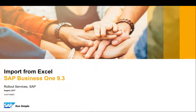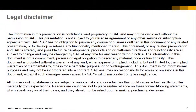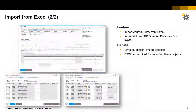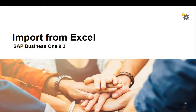Welcome to this short clip on the Import from Excel feature in SAP Business One version 9.3. In the Import from Excel function, you can now import journal entries. You can also import serial and batch numbers from Excel from within a transaction. You have additional authorizations to restrict this functionality to specific users. You can also import a single journal entry directly from within the journal entry form. Finally, you can import GL and BP opening balances from Excel. Let us have a quick look at this feature in SAP Business One.